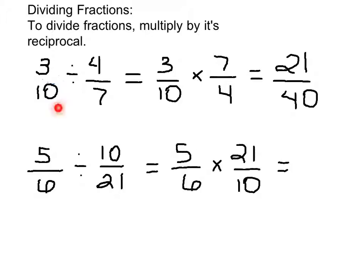So we have 3 tenths divided by 4 sevenths. We rewrite that as 3 tenths times the reciprocal. We just turn this upside down of 4 sevenths, so we get 7 fourths.